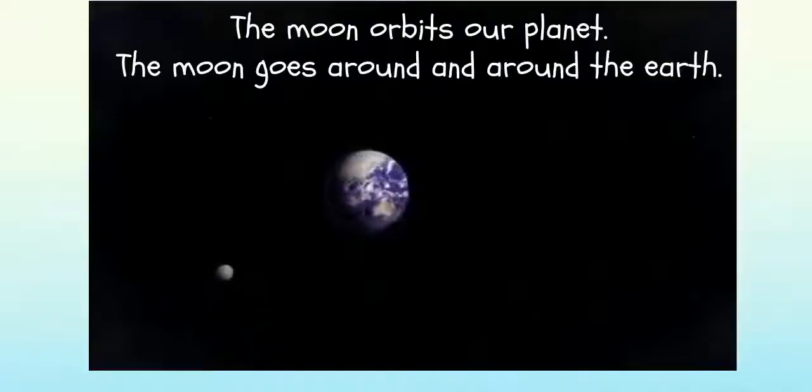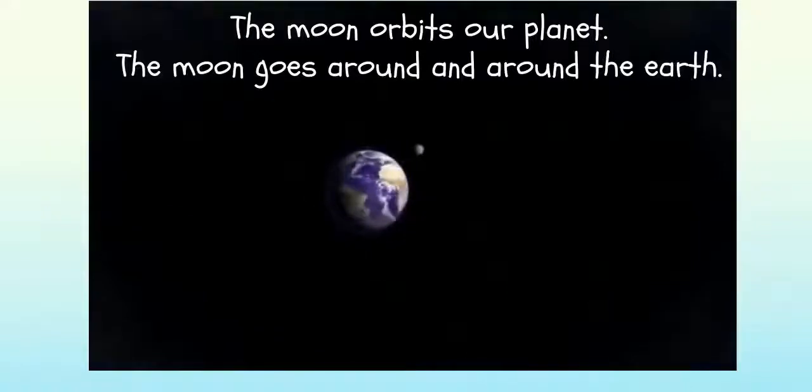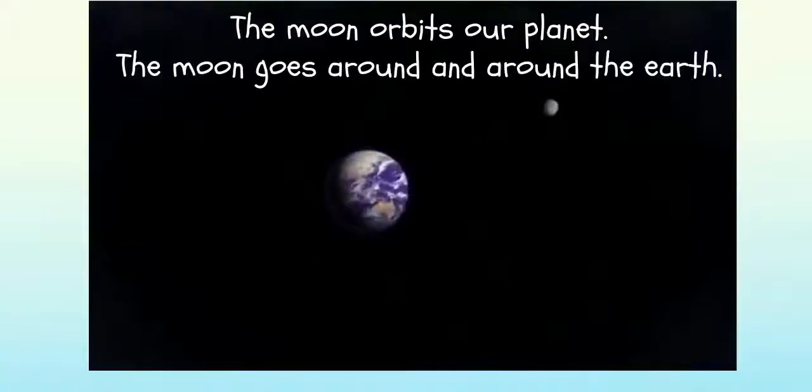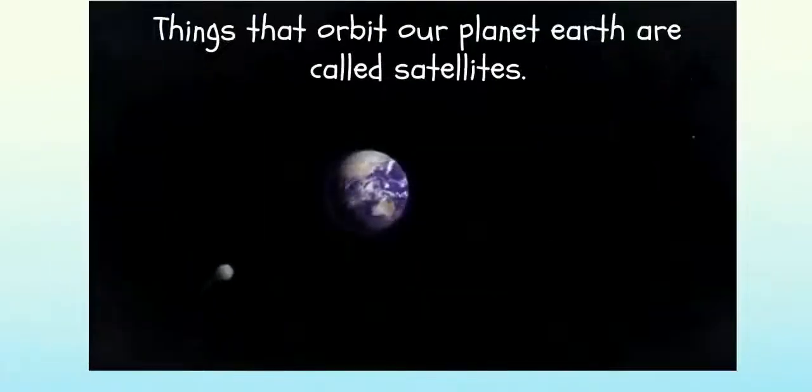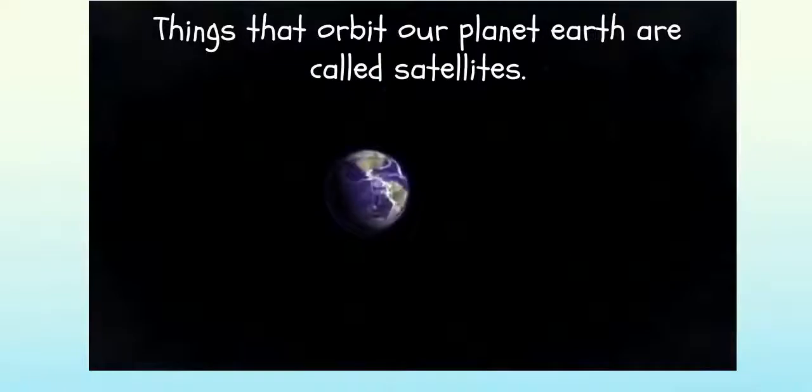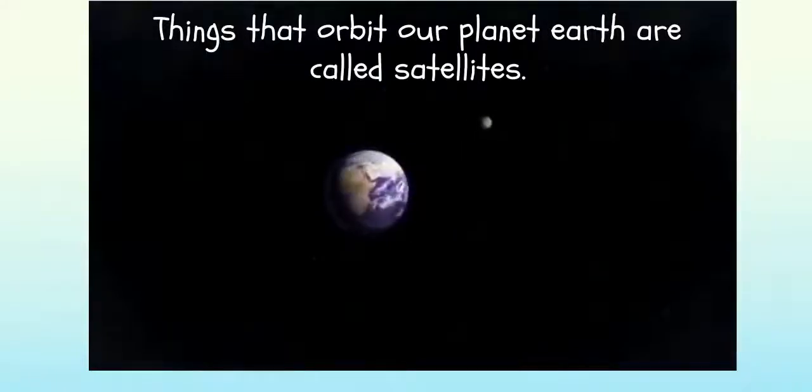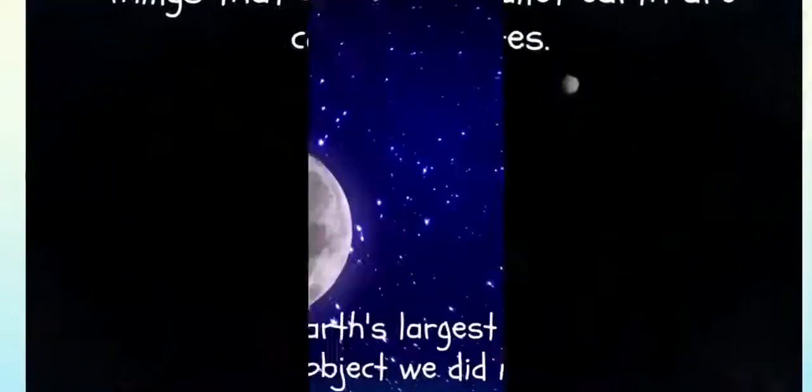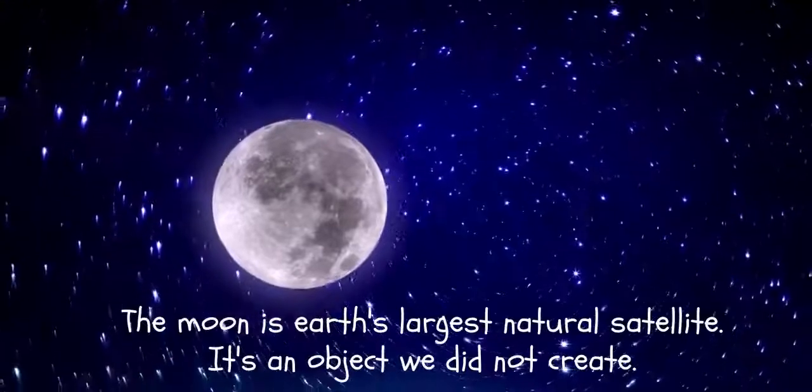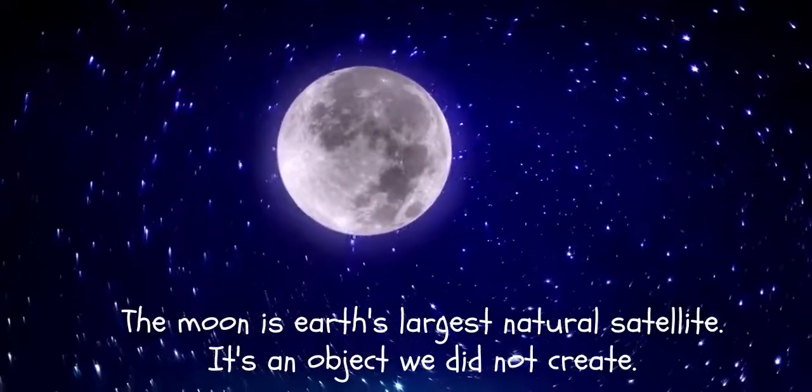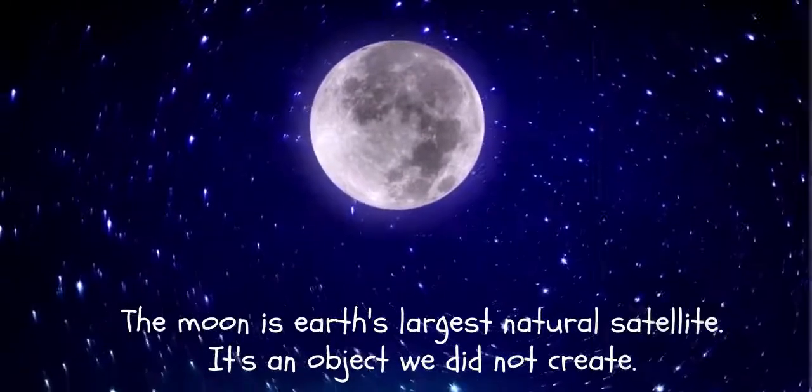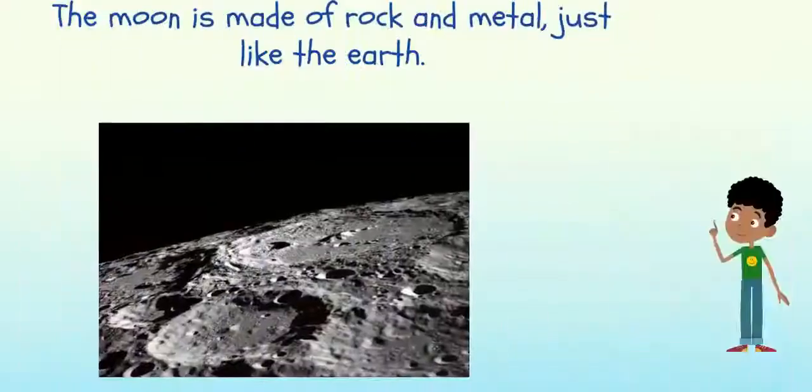The moon orbits our planet, meaning the moon goes around and around the Earth. Things that orbit our planet Earth are called satellites. The moon is Earth's largest natural satellite—it's an object we did not create.